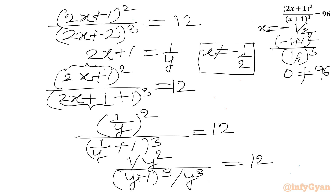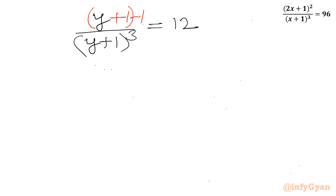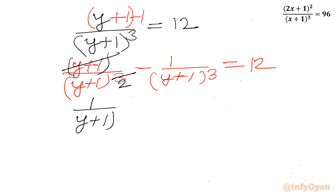Simplifying, in the numerator we get y and in the denominator (y + 1)³, equal to 12. Now I will add 1 and subtract 1 in the numerator, splitting it as: (y + 1)/(y + 1)³ minus 1/(y + 1)³ equal to 12. Canceling (y + 1) with the denominator, this gives 1/(y + 1)² minus 1/(y + 1)³ equal to 12.